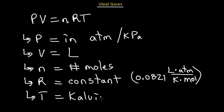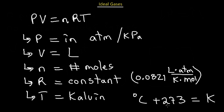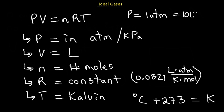Temperature will always be measured in Kelvin. To convert from degrees Celsius to Kelvin, add 273. On the IMAT you may be given degrees Celsius and will need to convert. One atmospheric pressure equals 101.3 kilopascals — another useful unit conversion.